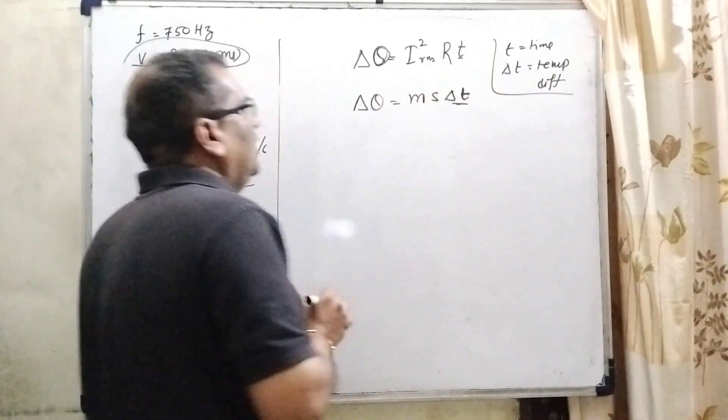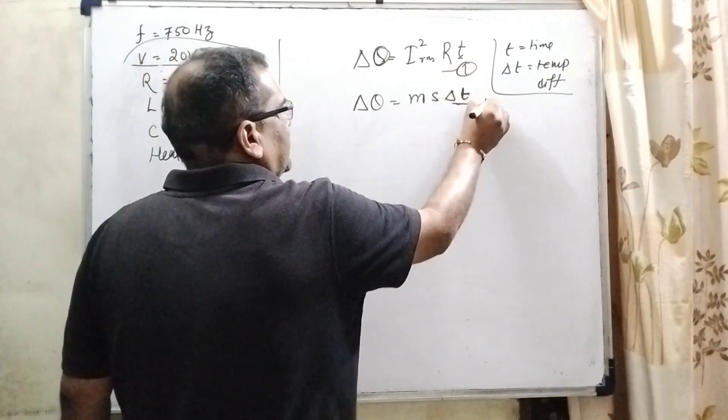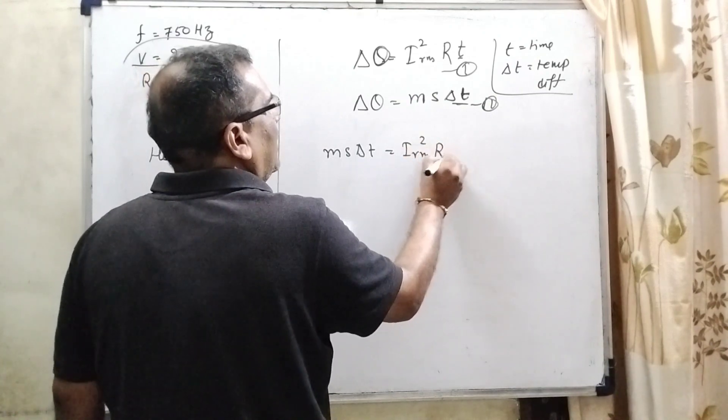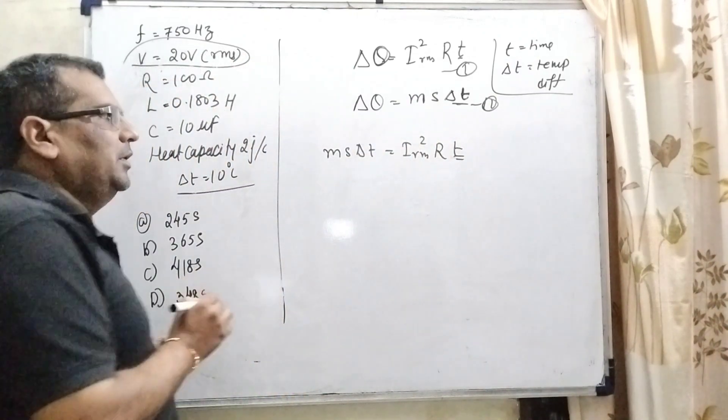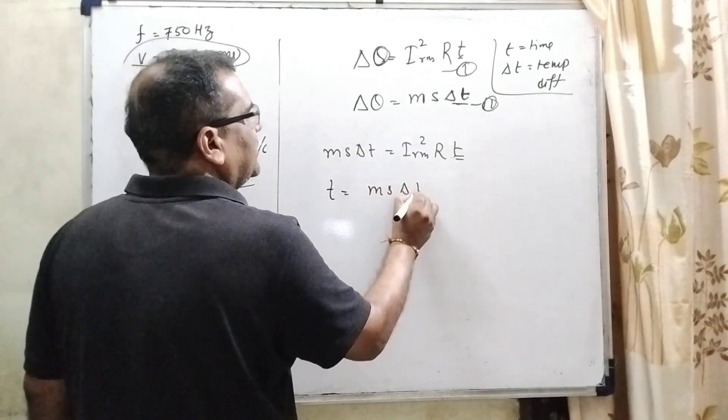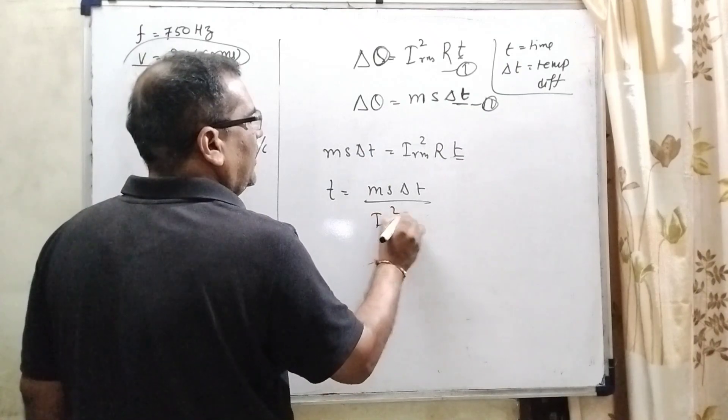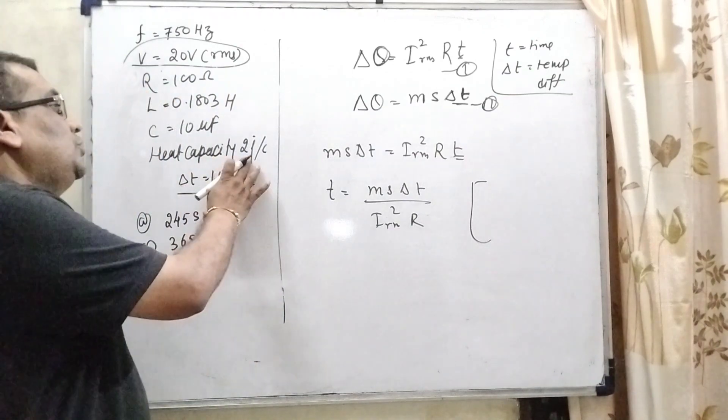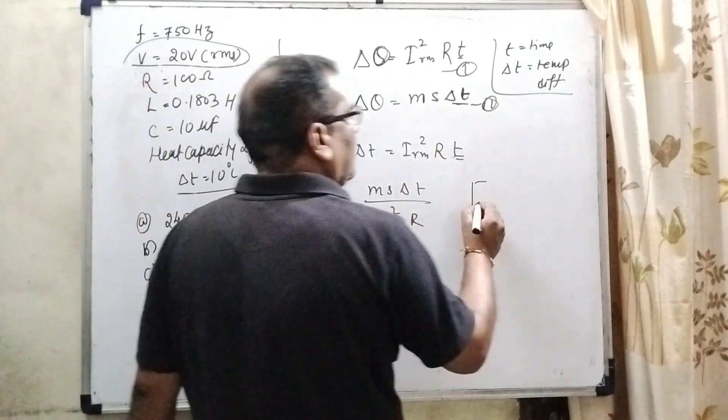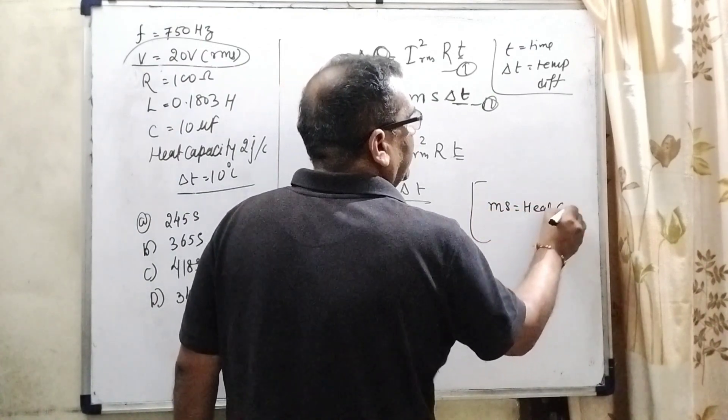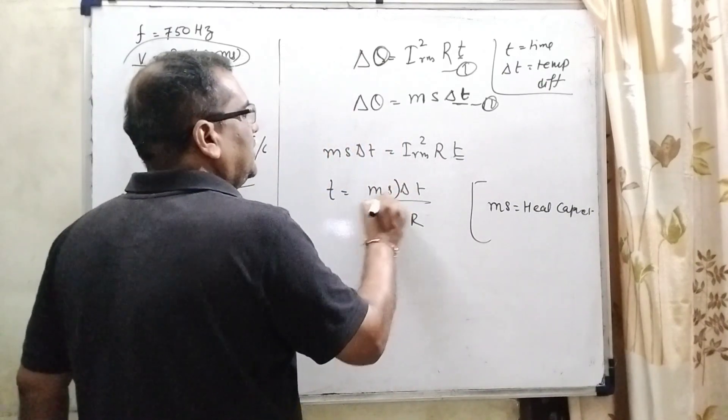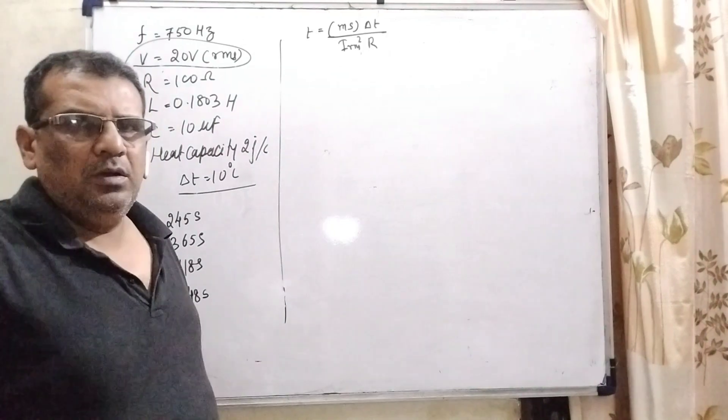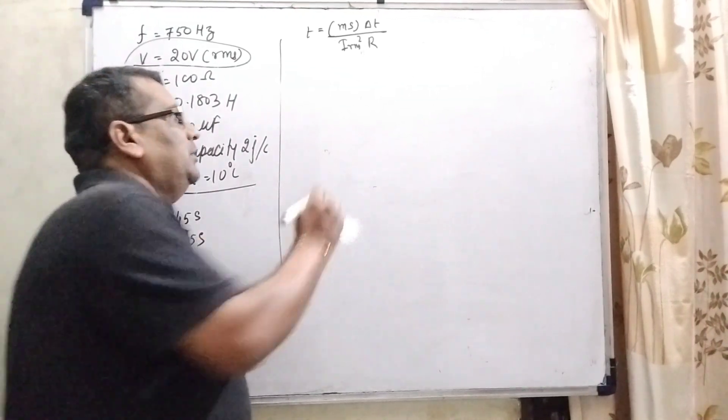For our convenience, we have written here. By comparing first equation and second equation, MS delta T is equal to IRMS² R T. And we have to find out this time. So here time equal to MS delta T upon IRMS² and R. Remember, here heat capacity we have given, 2 joules per degree Celsius. And what is the formula of heat capacity? MS. MS is called heat capacity. So let us first, we have to find out the RMS of current. For our convenience, we have to find out first XL.